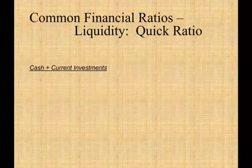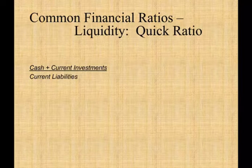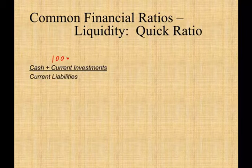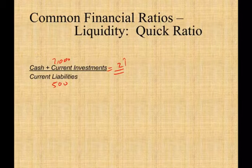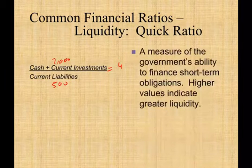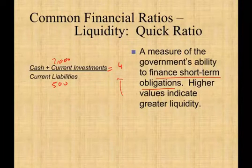Another ratio is the quick ratio: cash and current investments divided by current liabilities. This ratio is also used in the private sector. For example, if you have cash and current investments of 1,000 and current liabilities of 500, the ratio equals 2. If the numerator increases to 2,000, the ratio equals 4 — meaning you have more assets relative to your current liabilities. This ratio measures the government's ability to finance short-term obligations. Higher ratios indicate more liquidity, which is good — liquidity means you have enough money to fund yourself in the near term.